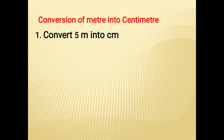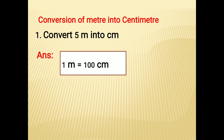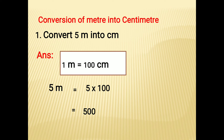The first step is to convert 5 meters into centimeters. 1 meter is equal to 100 centimeters, so 5 meters equal to 5 into 100, that is, multiply the given number by 100. So 5 into 100 is nothing but 500 centimeters.